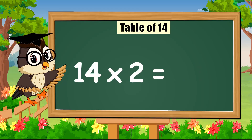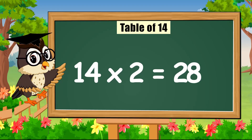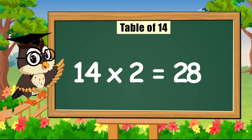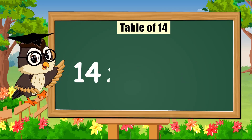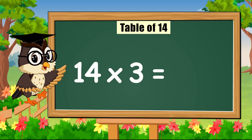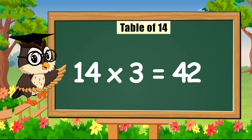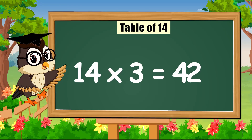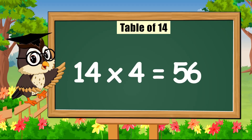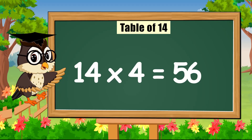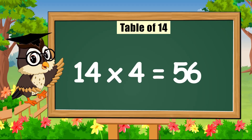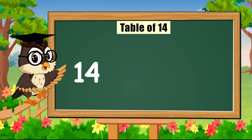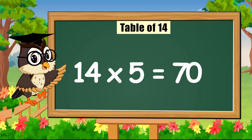Fourteen times two is twenty-eight. Fourteen times two is twenty-eight. Fourteen times three is forty-two. Fourteen times three is forty-two. Fourteen times four is fifty-six. Fourteen times five is seventy.